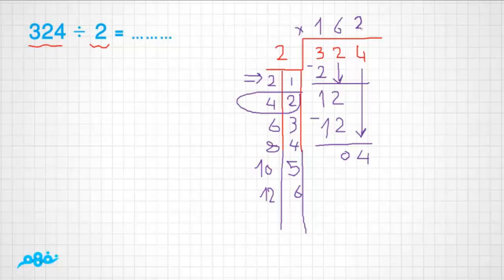Put two over four. Two times two is four. Four minus four is zero.